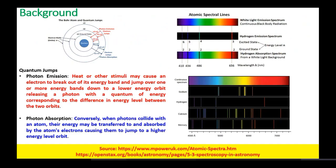Let us go into the basics. If you look into the atomic structure — the Bohr atom and quantum jumps. We have a nucleus and electron shells regarded as orbits where we have n1, n2, n3. n1 is the ground state and n2 and n3 are the excited states.